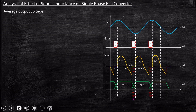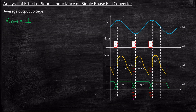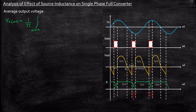Now, how to derive the average output voltage. Just like the way we were doing it in the previous cases, we know that Vout average is equal to one divided by the total time period. In this case the total time period we are considering is pi, starting from one point to the next as one complete waveform. The integration limits: if we carefully observe the output voltage, we are getting it only from alpha plus mu to pi plus alpha, so the lower limit is alpha plus mu and the upper limit is pi plus alpha. We are not considering beyond that because the output voltage goes to zero. So this is nothing but Vm sine(omega t) d(omega t).